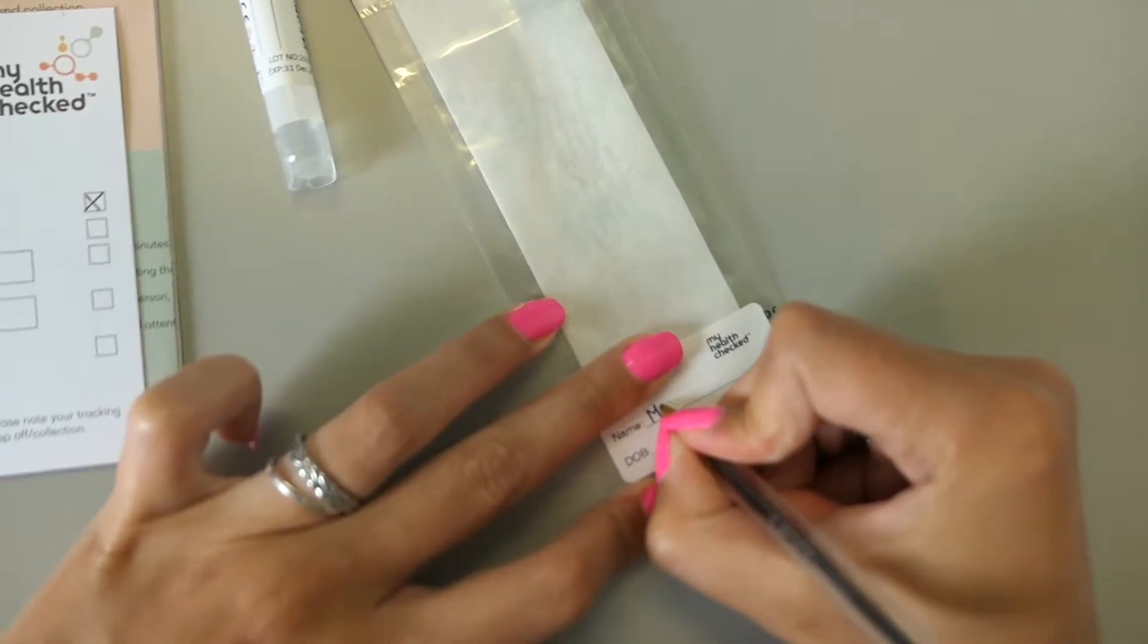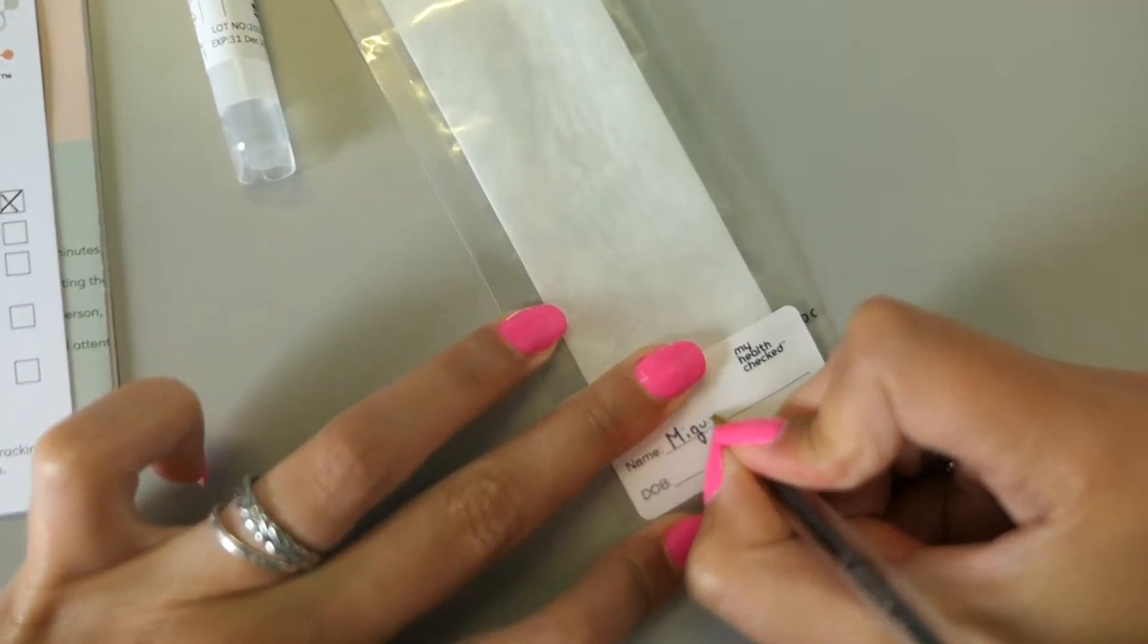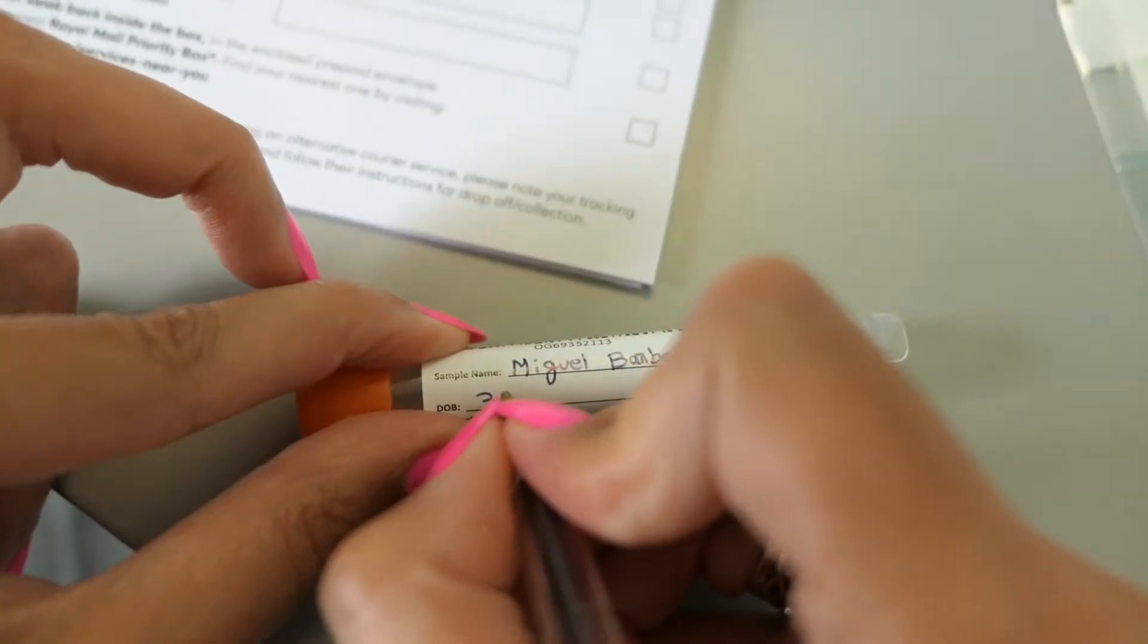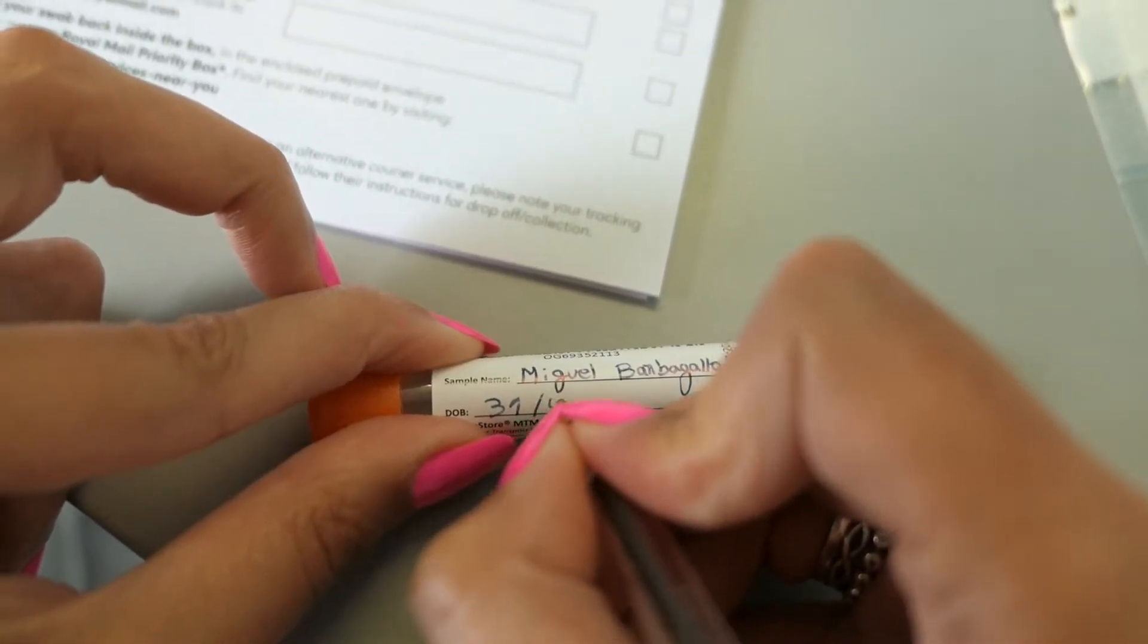You should then complete your name and date of birth on the biohazard pouch and tube of Primestore MTM inactivation media. Obviously, this should match the details registered online in the previous step.